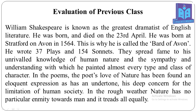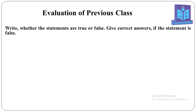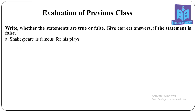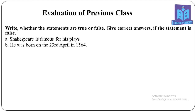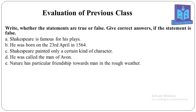Dear learners, here is the text. There will be two types of questions called information transfer: one is information table, and another is statements true or false. Write whether the statements are true or false, and give correct answers if the statement is false. There are five statements: A. Shakespeare is famous for his plays. B. He was born on the 23rd April in 1564. C. Shakespeare painted only a certain kind of character. D. He was called the Man of Avon. E. Nature has particular friendship towards man in the rough weather.